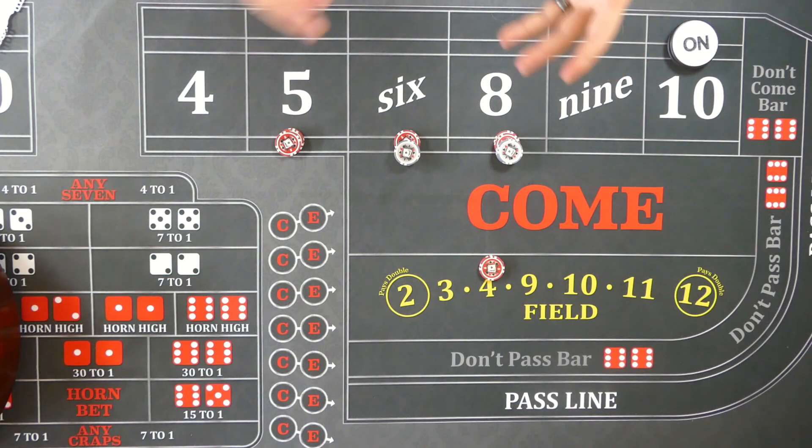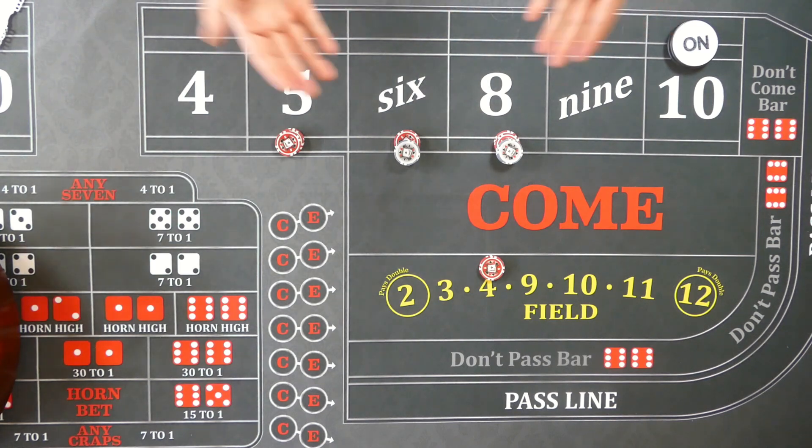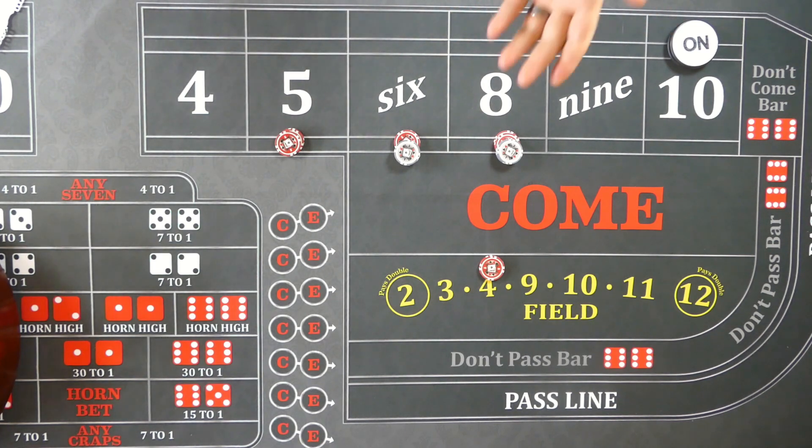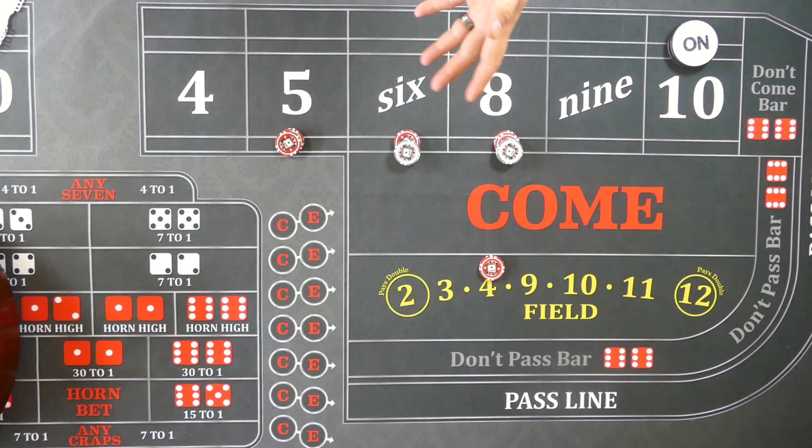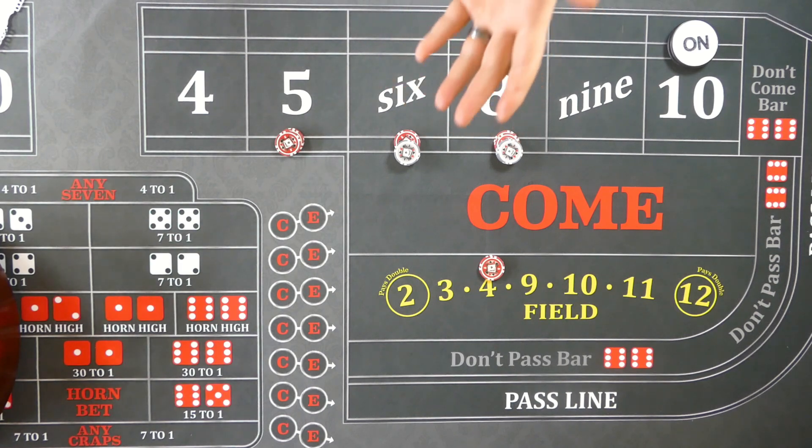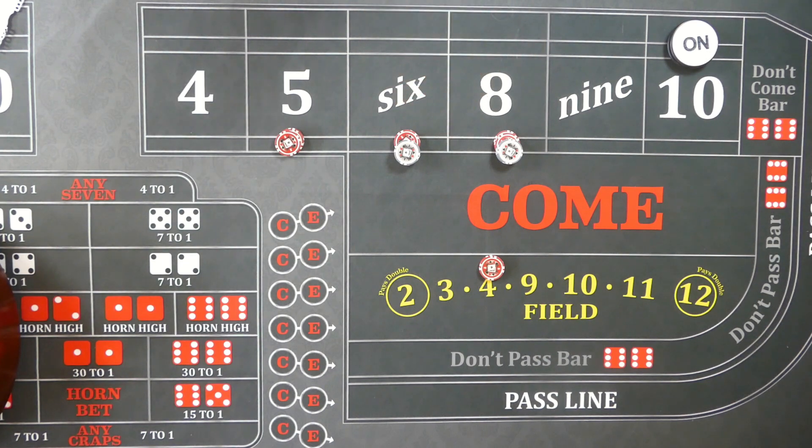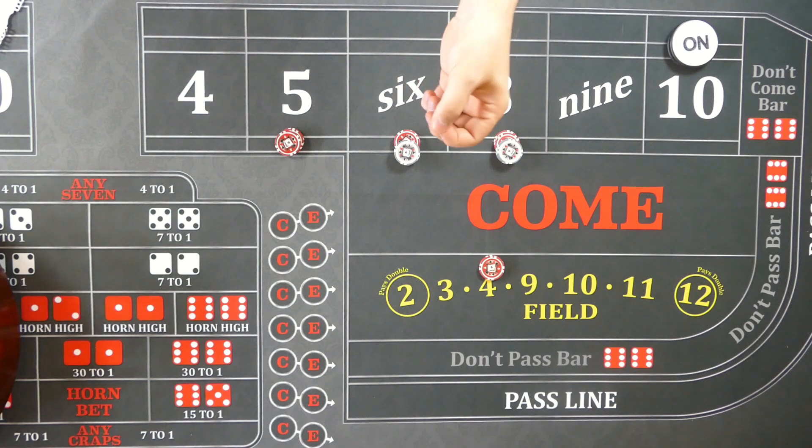So whatever you have on the table or whatever your initial buy-in is is going to be a loss. When you're looking at $61 in action and you're averaging $10.50 a win, that means you need six hits, six rolls of the dice, six non-seven rolls of the dice just to break even.